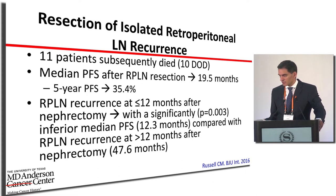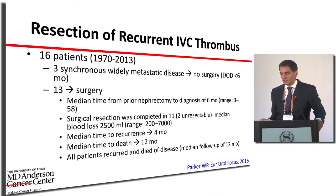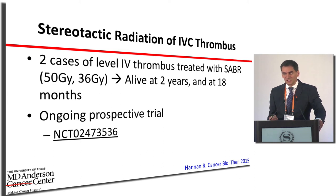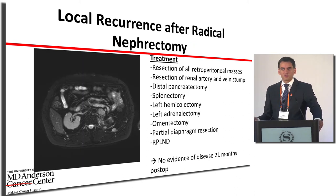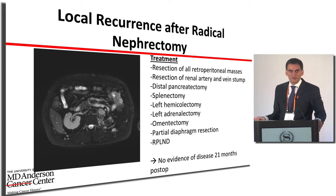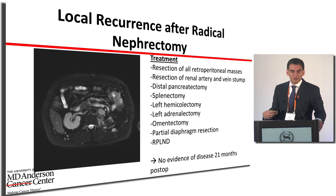Regarding IVC thrombus recurrence — a very difficult situation — Mayo Clinic data shows unfortunately all patients who had this recurrence and underwent surgery did not survive past one year, indicating surgery has limited benefit here. There are small reports on radiation after thrombus recurrence, with an ongoing clinical trial at UT Southwestern Dallas. The radical nephrectomy recurrence case shown required collaborative surgery with surgical oncology colleagues to remove all tumors, and this patient is doing well about two years post-operatively.